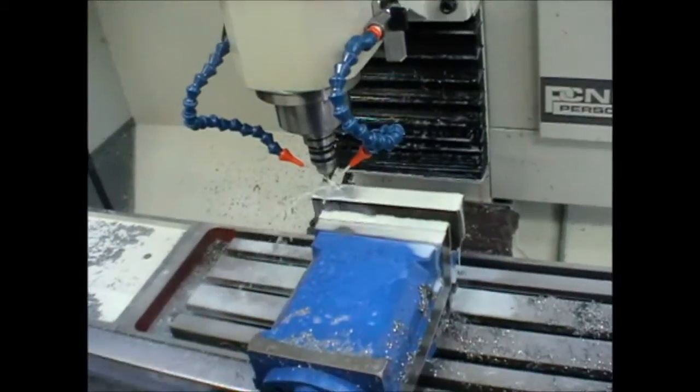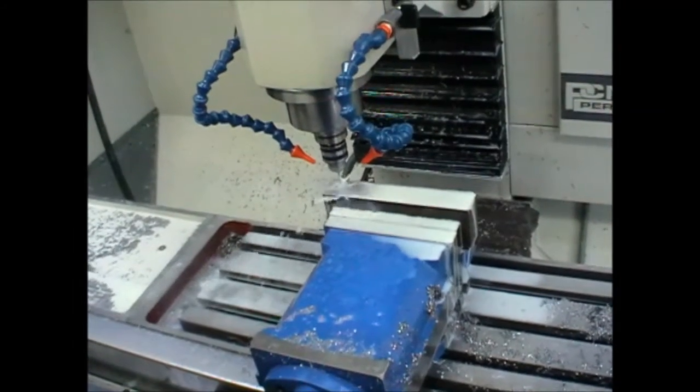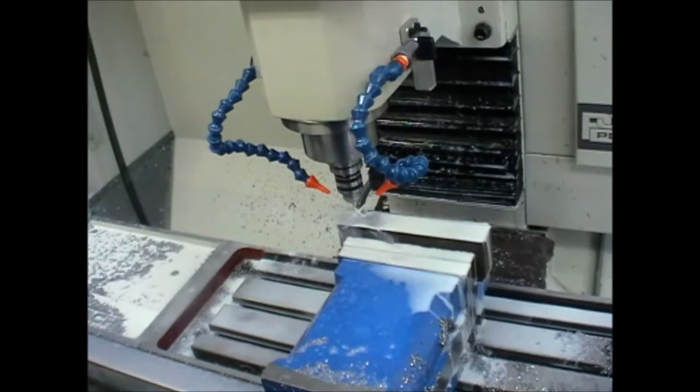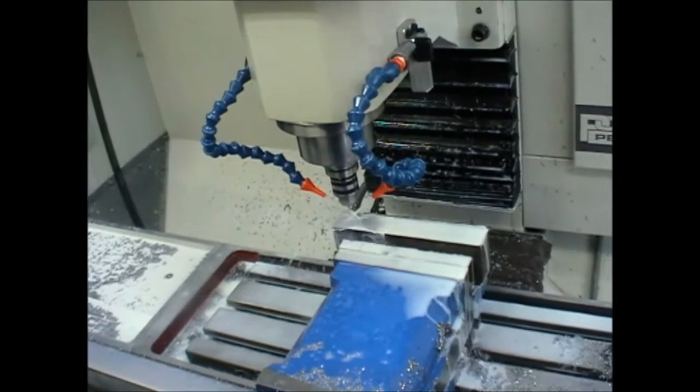We're drilling the little clearance holes for the ring spanner corners. Just got a 2mm stub drill in there.